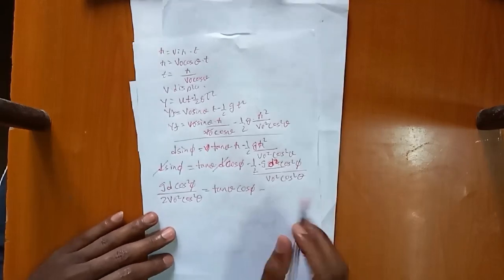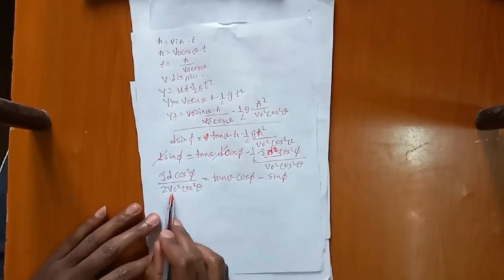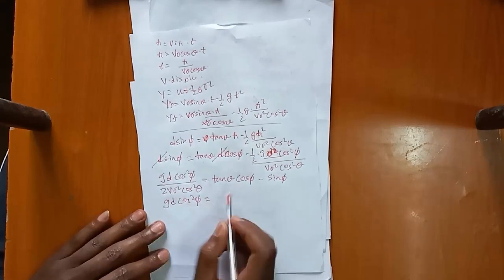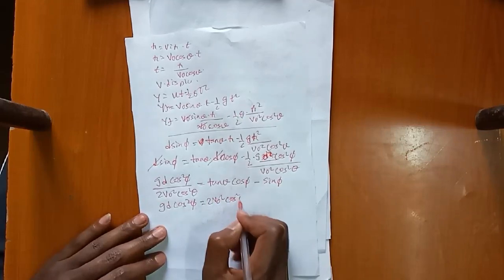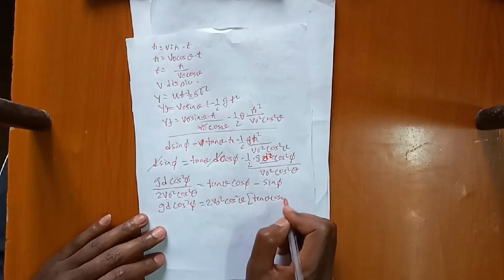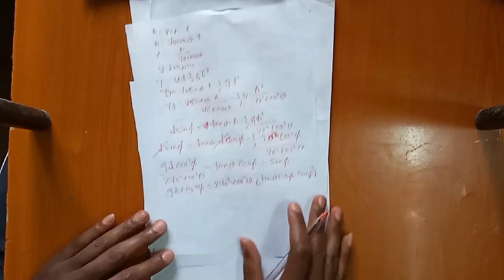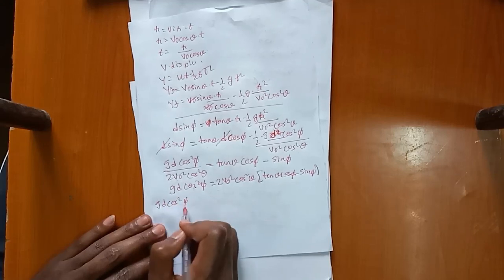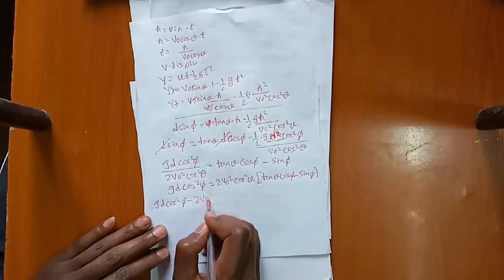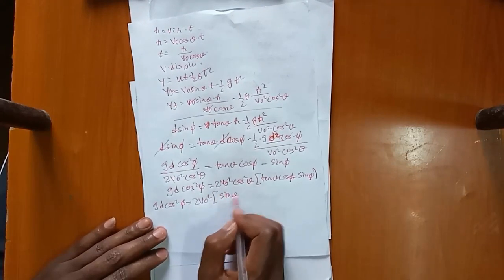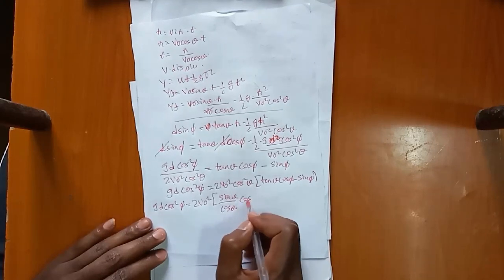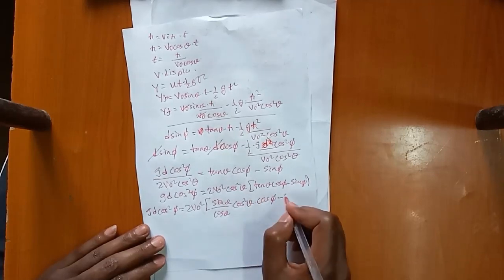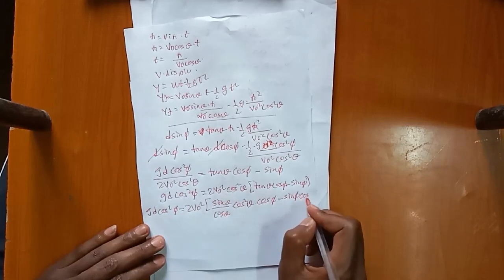We also substitute x = d·cosφ. After replacing x with d·cosφ and simplifying, d squared terms cancel and we arrive at: d·sin φ equals d·cosφ·tanθ minus g·d²·cos²φ over 2v₀²·cos²θ.